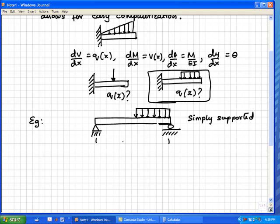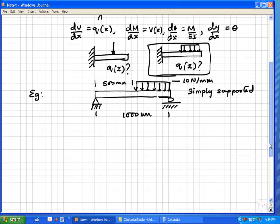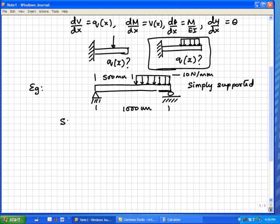Let us say this is 1000 units. This is 500 millimeters and this is 10 Newton per meter. We have specific numbers and we want to be able to find out shear force, bending moment functions, slope functions and displacement functions.